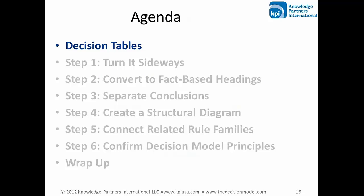Here is the agenda for today's webinar. It starts by taking a look at the kind of decision models we see in organizations today, which are probably much like the ones you've seen or created. The core of the webinar is the set of six steps for transforming a single decision table into one that can serve as a component in a holistic, normalized decision model. Finally, there's a summary of each step correlated to the decision model principles each one represents.